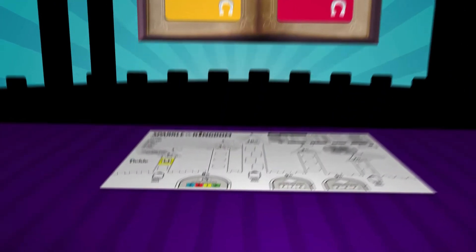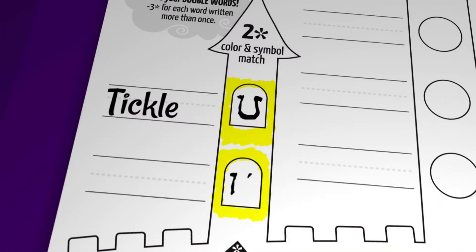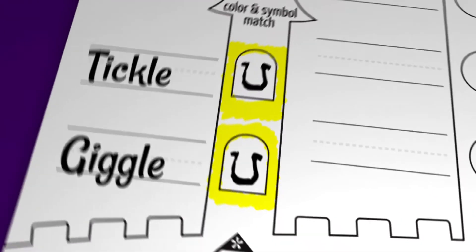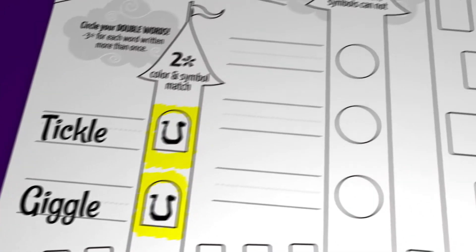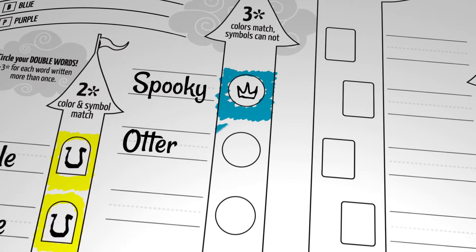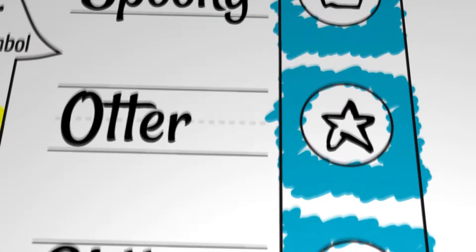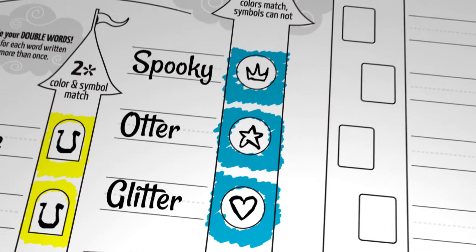In the two-story towers both the color and the symbols must match. Shout out the words of your magic spell when you complete a tower. Tickle Giggle! In the three-story towers the colors must match but the symbols cannot. Spooky Otter Glitter! Oh that's so cute!